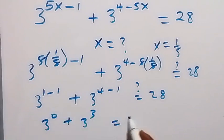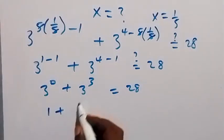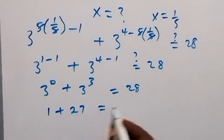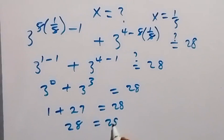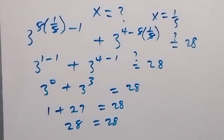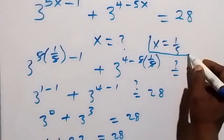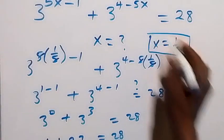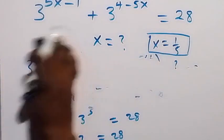This simplifies to 3 raised to power 0, which is 1, plus 27, which equals 28. Since the left-hand side equals the right-hand side, x equals 1 over 5 satisfies the given problem.